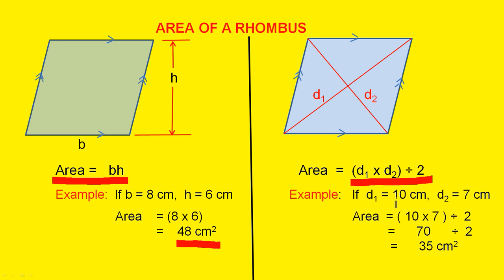So if the first diagonal is 10 centimeters and the next diagonal is 7 centimeters, the area is 10 times 7 divided by 2, which is 70 divided by 2, which is 35 square centimeters.